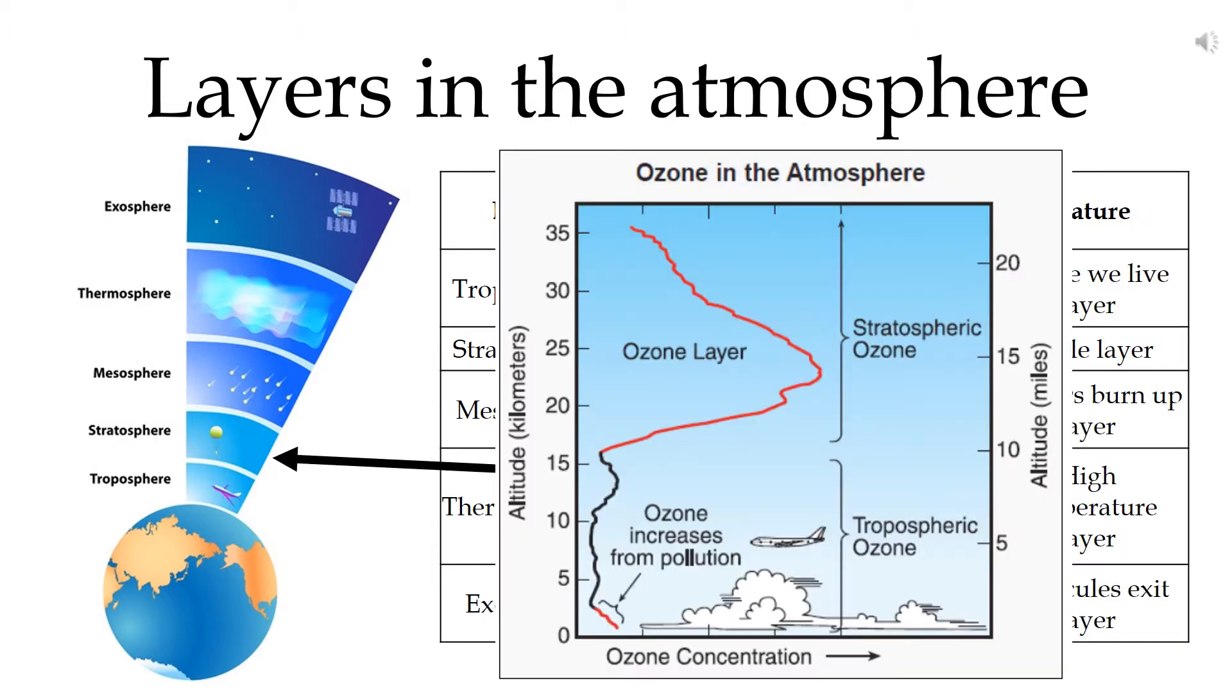Then there is the stratosphere, which is between about 12km to 50km above the surface. In this layer there is very little dynamical mixing and there are almost no clouds or weather events in the stratosphere.